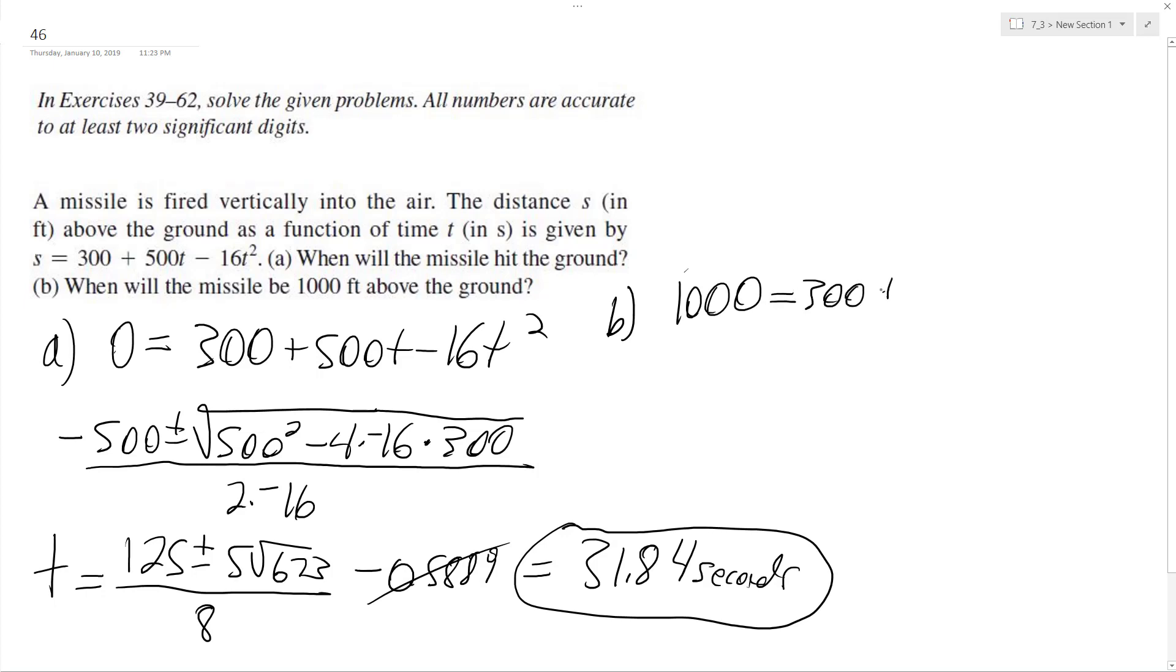Basically, here's what's going to happen. We get negative 700 plus 500t minus 16t squared. And because it starts at 300 feet, I'm not going to write out the quadratic formula, but we get t equals approximately 1.47 seconds and 29.8 seconds.